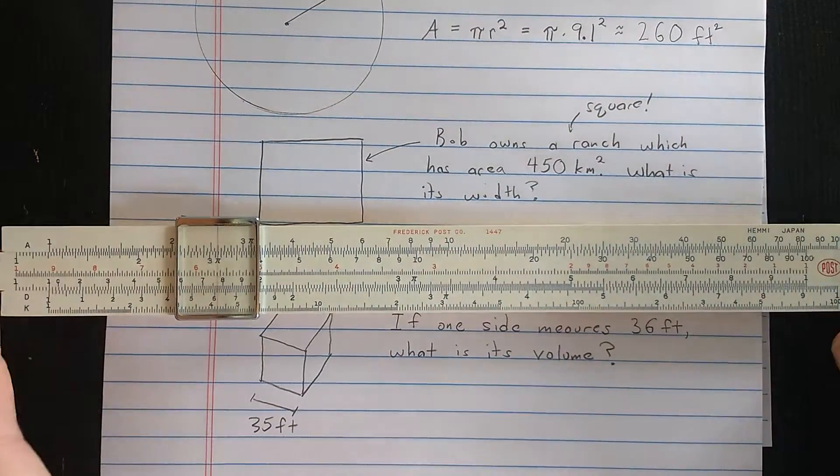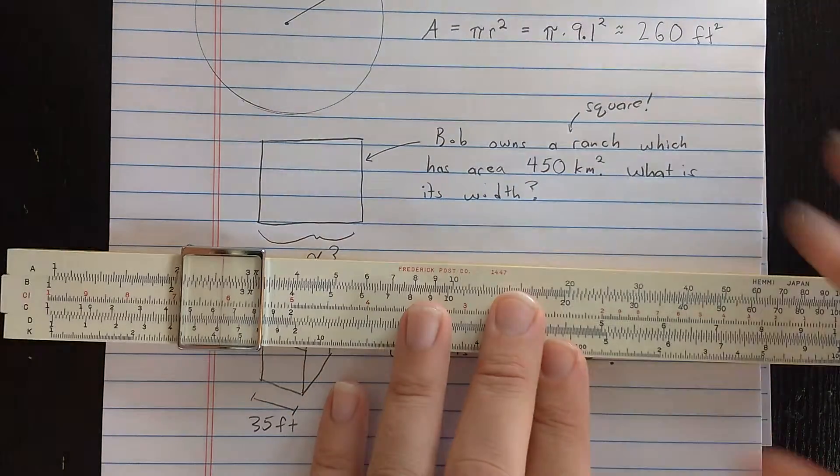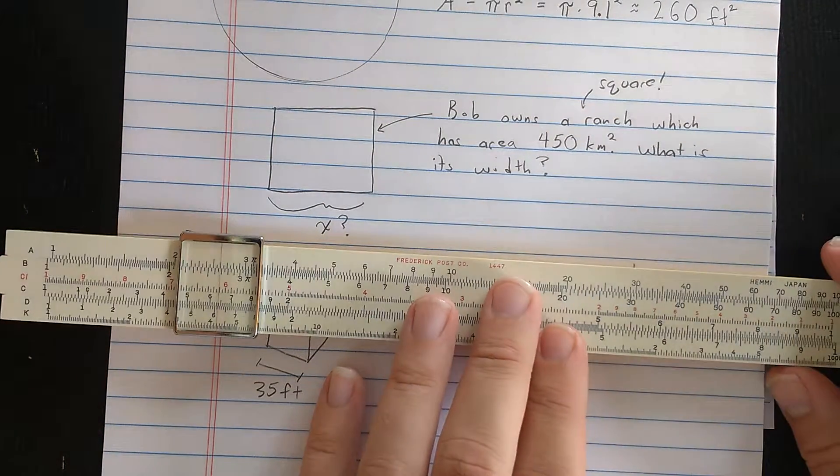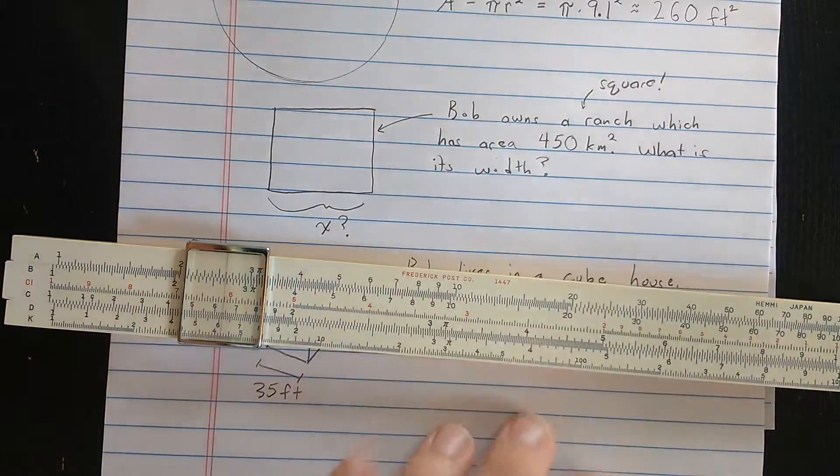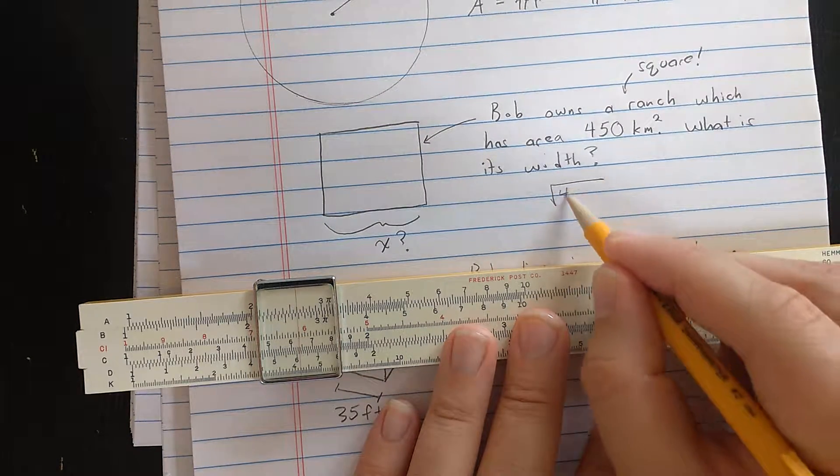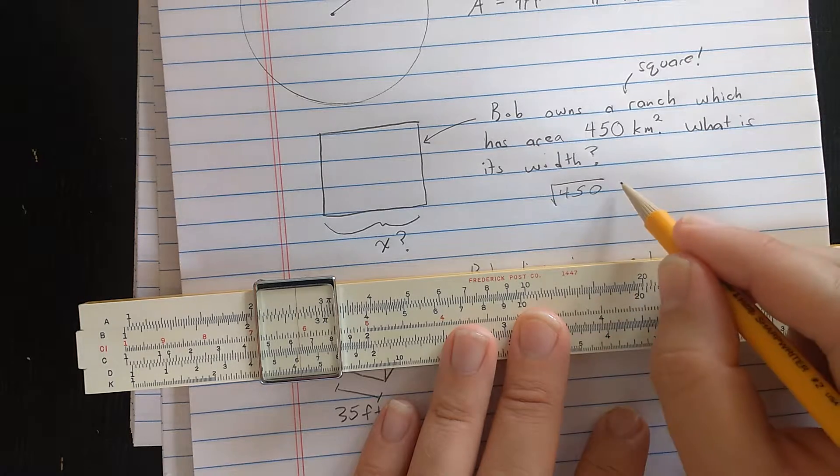Now, let's say Bob owns a ranch which has area 450 square kilometers. What is the width? So essentially what I need to compute here is just a square root of 450.